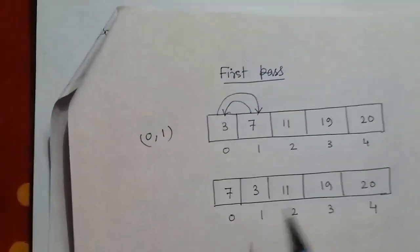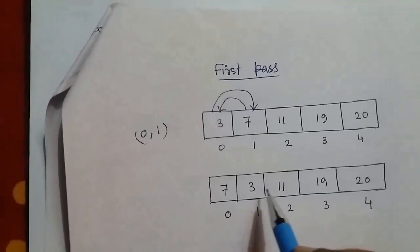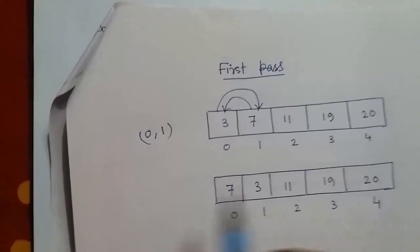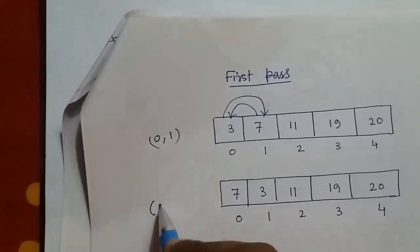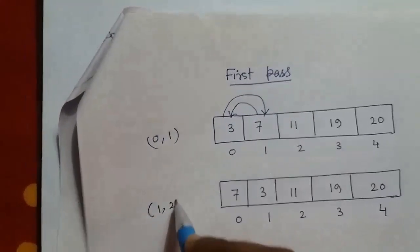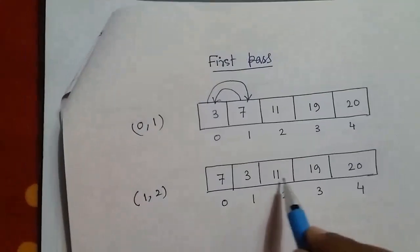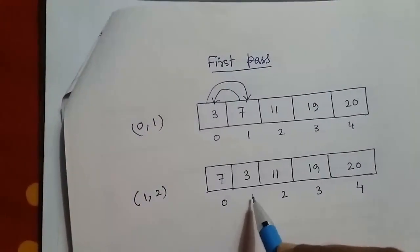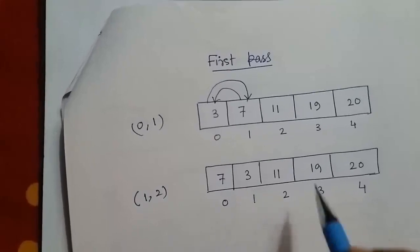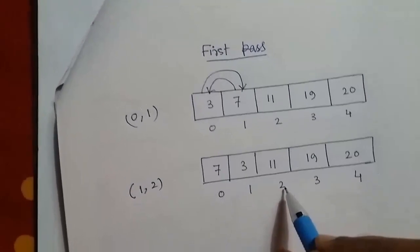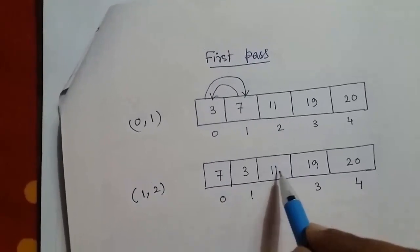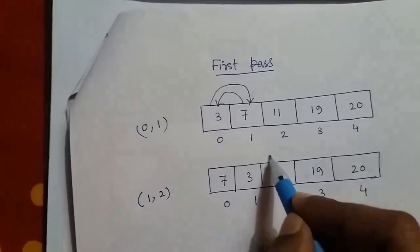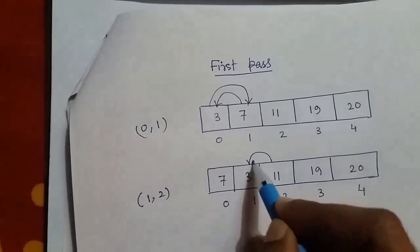Now we will compare the next two consecutive elements at index 1 and 2. At index 1 we have 3 and at index 2 we have 11. Again, 3 and 11 are not in perfect order, so they will be exchanged.